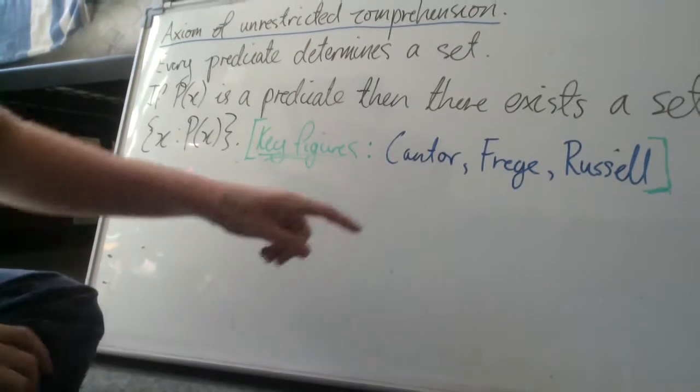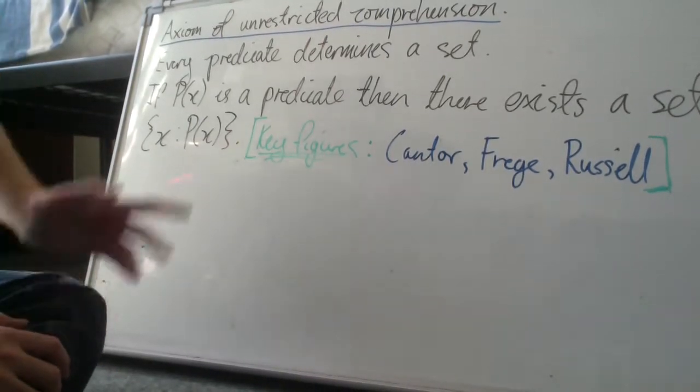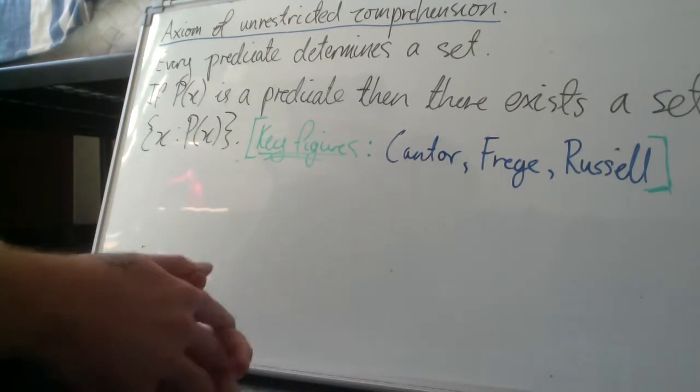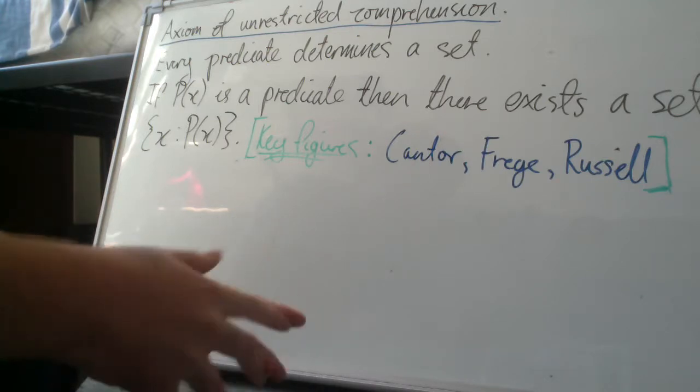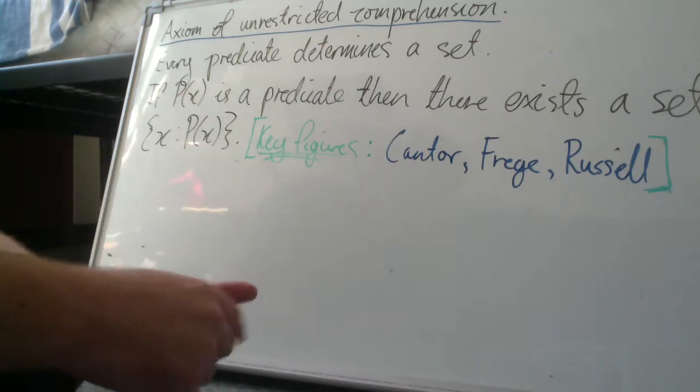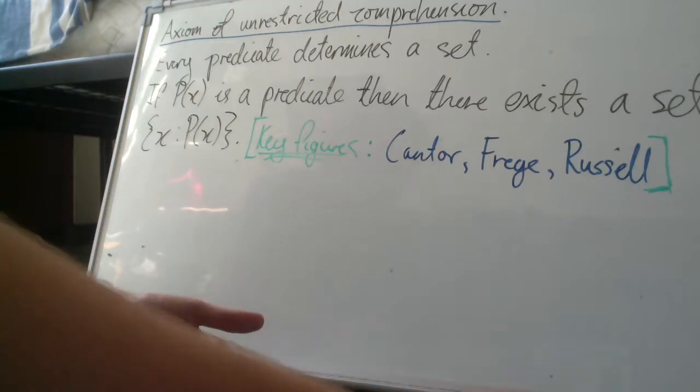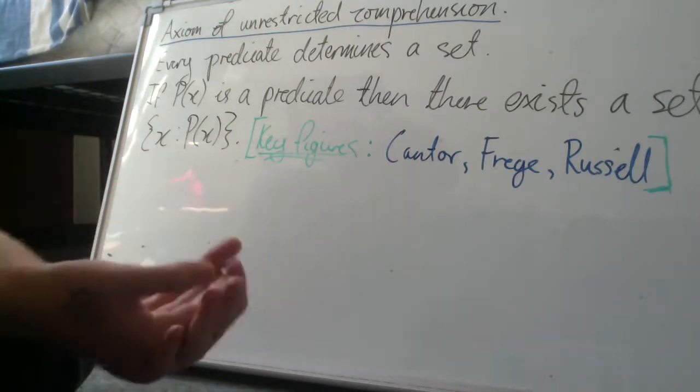One thing we want to note is that the set theory that we're dealing with here is called a pure set theory, in that every object within the theory is a set. So in the standard foundations that are used today, which is called ZFC, everything is built from the empty set or an assumed infinite set. You can also derive the empty set from the infinite set. So everything we're talking about here, all the variables represent sets.